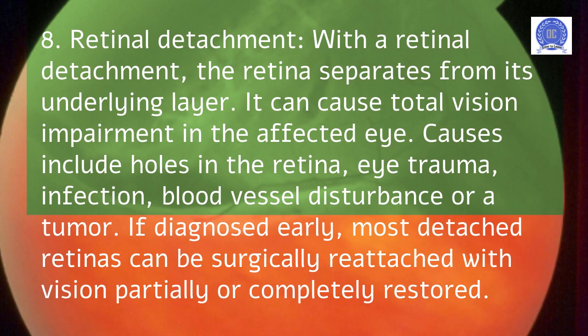With a retinal detachment, the retina separates from its underlying layer. It can cause total vision impairment in the affected eye. Causes include holes in the retina, eye trauma, infection, blood vessel disturbance, or a tumor. If diagnosed early, most detached retinas can be surgically reattached with vision partially or completely restored.